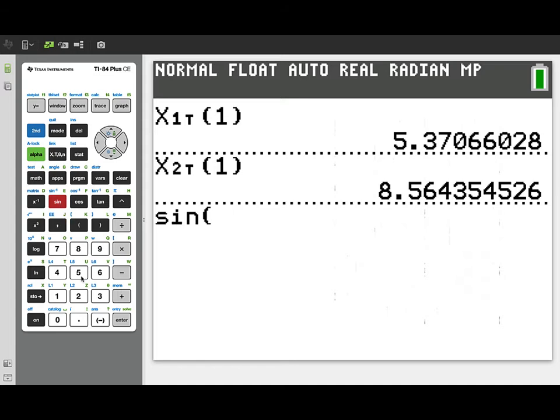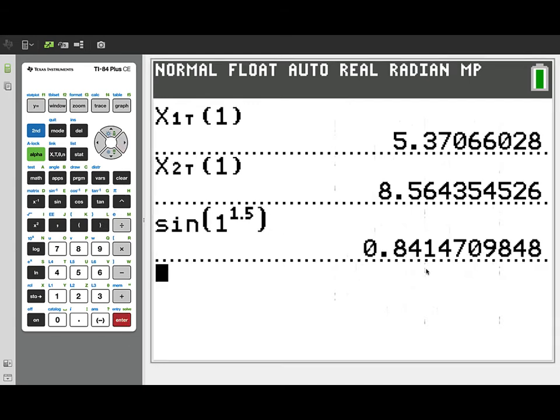So I'm going back to the calculator screen. I'm going to evaluate the velocity of particle P at that time. We have its position already shown there on the calculator screen. So I'm going to evaluate the sine of t to the 1.5 for t=1.